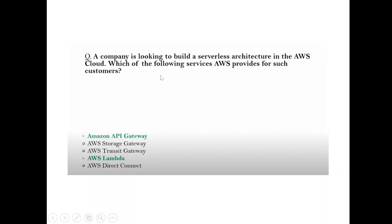Question: A company is looking to build a serverless architecture in AWS cloud. Which services are appropriate? Answer: Amazon API Gateway and AWS Lambda — Lambda is a serverless function service and API Gateway is also serverless.